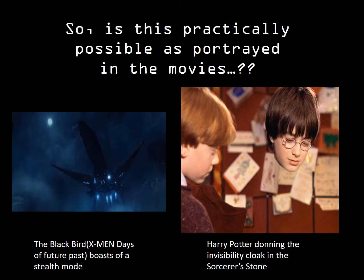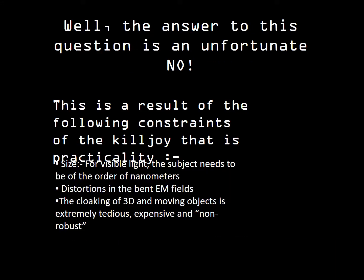Contrary to the scientific reachability, there has been a lot of progress in the fictional world, as shown in movies — the Blackbird in X-Men and Harry Potter's invisibility cloak, which we are all aware of. But the answer to whether this is practically possible is an unfortunate no. This is a result of the following practical constraints: for visible light, the structure needs to be of the order of nanometers, not exceeding a maximum of 20 nanometers. There are also distortions in the bent EM fields. The cloaking of 3D and moving objects is extremely tedious, expensive and non-robust. The metamaterial must be built specific to the orientation and in constant correspondence with the motion of the object for cloaking to be possible.